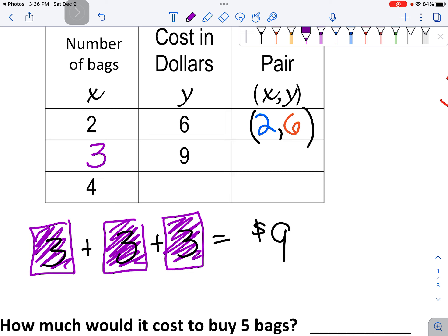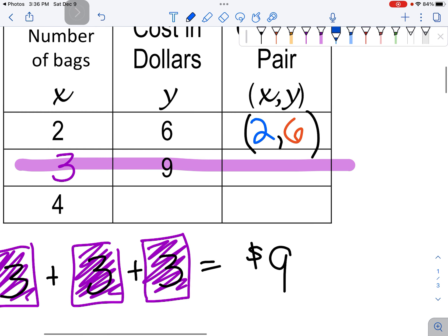So for that next line, I now have three and nine. So we'll write three, comma, nine, and then parentheses.